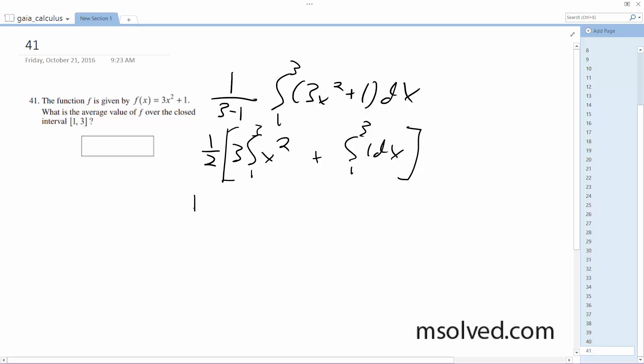So what we end up with is 1 half of 3x cubed over 3, which cancels out, plus x.